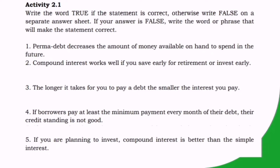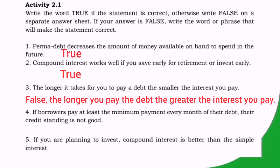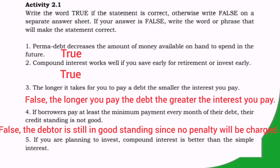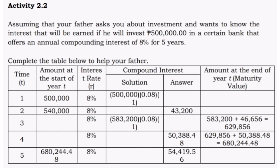Activity 2.1: Write the word TRUE if the statement is correct, otherwise write FALSE on a separate answer sheet. If your answer is false, write the word or phrase that will make the statement correct. One: Permadebt decreases the amount of money available on hand to spend in the future — TRUE. Two: Compound interest works well if you save early for retirement or invest early — TRUE. Three: The longer it takes for you to pay a debt, the smaller the interest you pay — FALSE; the longer you pay the debt, the greater the interest you pay. Four: If borrowers pay at least the minimum payment every month of their debt, their credit standing is not good — FALSE; the debtor is still in good standing since no penalty will be charged. Five: If you are planning to invest, compound interest is better than simple interest — TRUE.